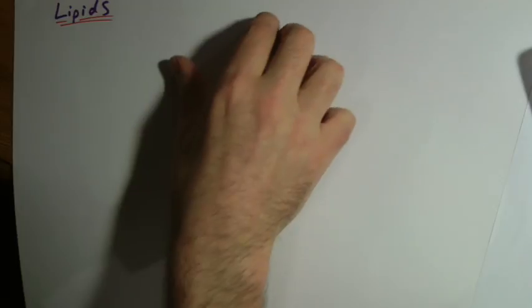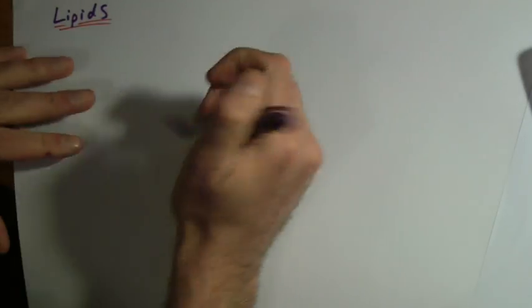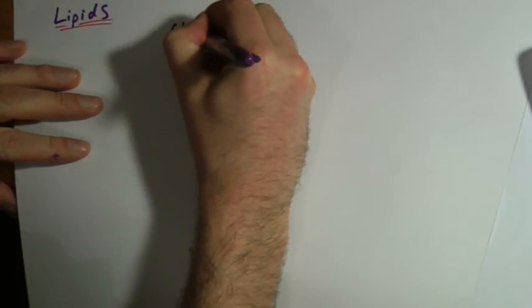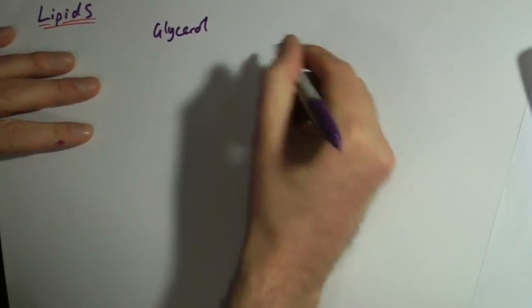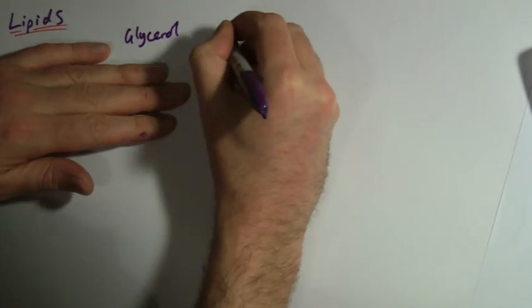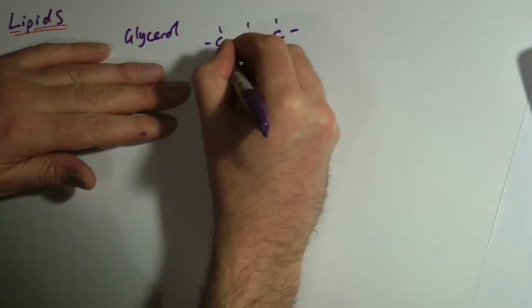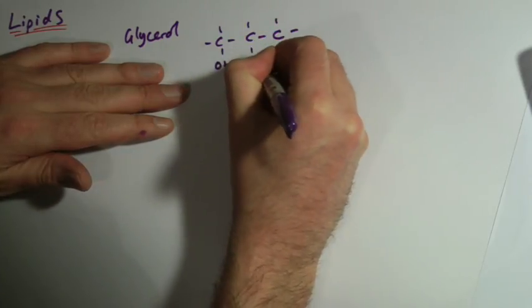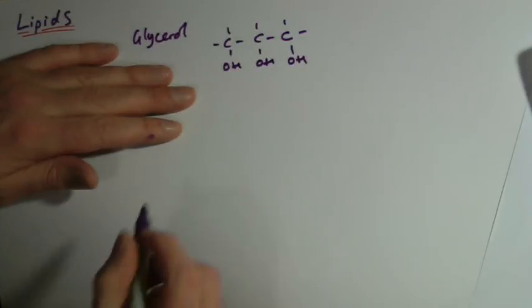Next on our journey into the structure of some of the biochemical molecules is lipids. I quite like the structure of lipids. It consists of two things. We've got glycerol, which is a nice molecule to remember. It's basically three carbons. It's not basically, it is three carbons with three OH groups. That's glycerol.